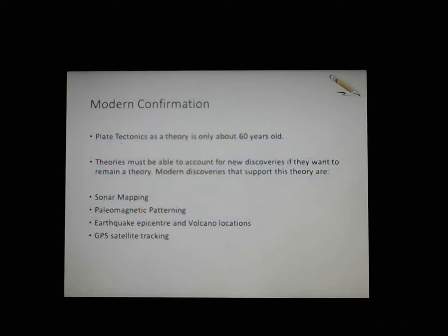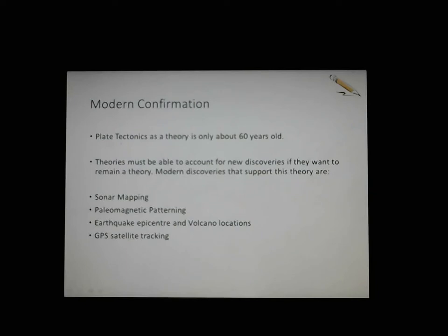Plate tectonic theory is about 60 years old. When it was first developed — and we'll talk more about the history in a couple of lessons — it was laughed out of the room. The prevailing idea was that the world looked the way it looked and always had. Alfred Wegener based his ideas on the shape of the land, the alignment of mountain ranges, and fossils found in different places. He proposed it, and it was tossed out. But modern discoveries from around the time of World War II started giving credence to the idea.